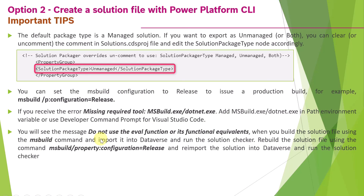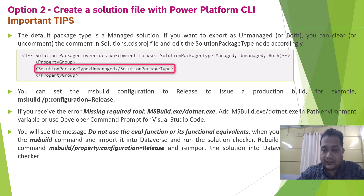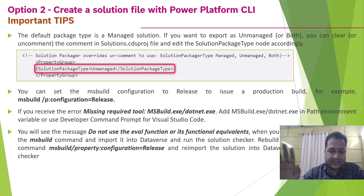A fourth tip: you may see a message 'do not use the eval function or its functional equivalents' when building with MSBuild and running the solution checker in Dataverse. To resolve this, rebuild using msbuild /p:configuration=release and re-import into the Dataverse environment — this will clear that warning. That's all for this video covering how to package your solution into a Dataverse environment using both approaches.